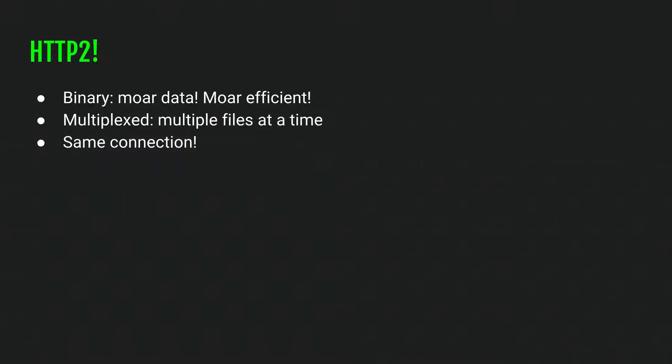So what about HTTP/2? Why is HTTP/2 faster than HTTP/1? HTTP/2 is binary, which is a more native way for computers to talk to each other and exchange data. As a result, you can put more data into those requests, so it's more efficient at moving large amounts of data. It's also multiplexed, so you can move multiple files at a time — you don't have to do one file at a time. It also shares the same connection, so you don't have to do one connection per request; you can open one connection, do your work, and close it.